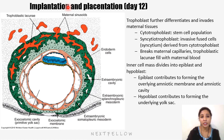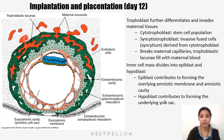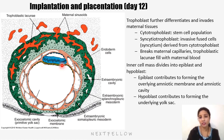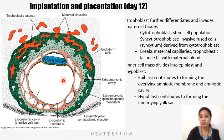The trophoblast differentiates into cytotrophoblast — a stem cell population that proliferates — and syncytiotrophoblast, the invasive fused syncytium derived from cytotrophoblastic cells, which breaks the maternal capillaries. Trophoblastic lacunae become filled with maternal blood. The inner cell mass differentiates into epiblast and hypoblast: epiblast contributes to the overlying amniotic cavity and amniotic membrane, while hypoblast contributes to the formation of the underlying yolk sac cavity.